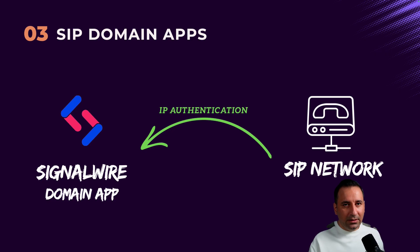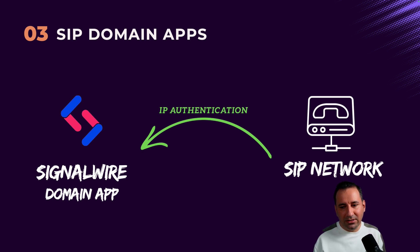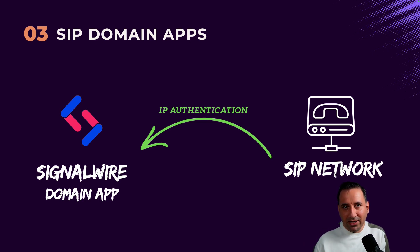The third method is SIP Domain Apps. In the previous method we needed to register our PBX as an endpoint. That's possible, but there is another option: when you install your telephony system in the cloud it has a public IP address, and it's much easier to use IP authentication instead of registration. So you can use SignalWire Domain Apps to whitelist your IP address and do IP authentication instead of registration, and accept INVITE requests from your PBX system.